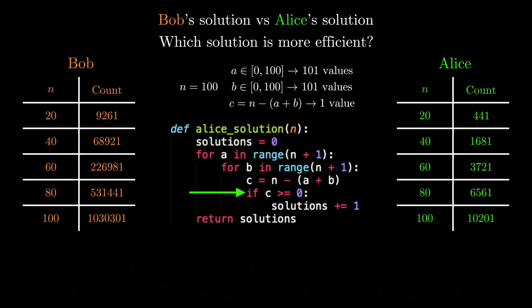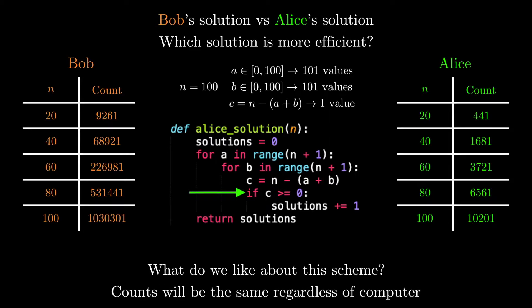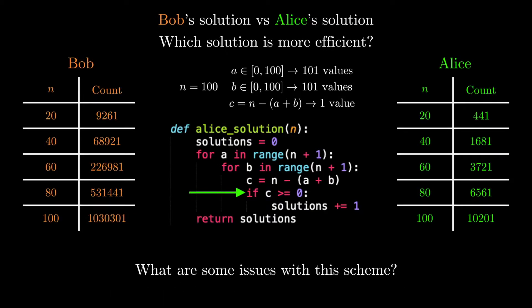All right, so let's take a step back and analyze this measure. What we really like about this scheme for measuring efficiency is that it's completely machine independent. Even on a supercomputer, these counts are not going to change. But is there anything we don't like?